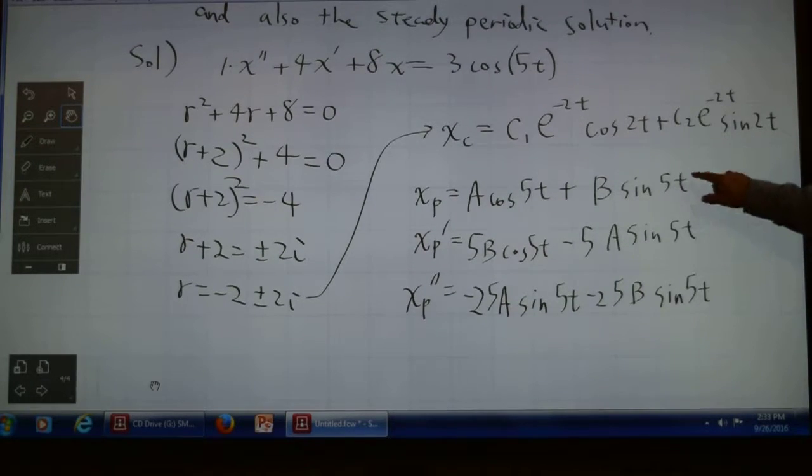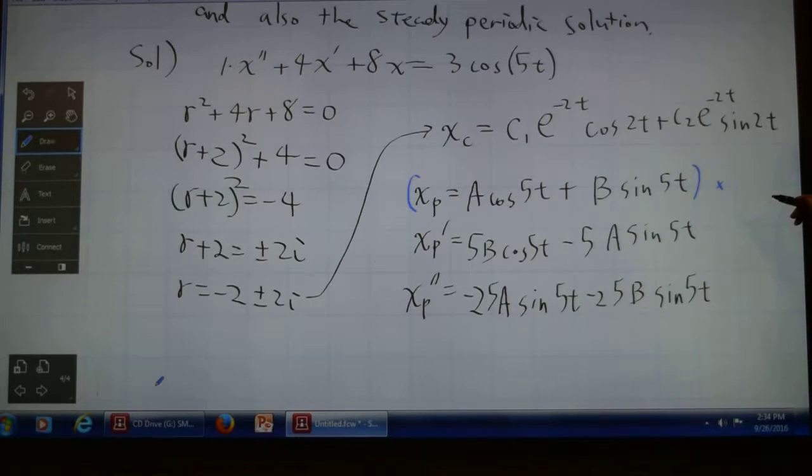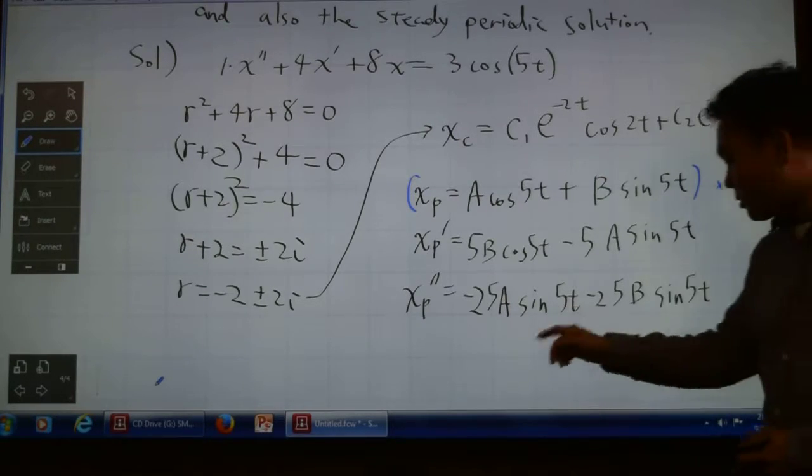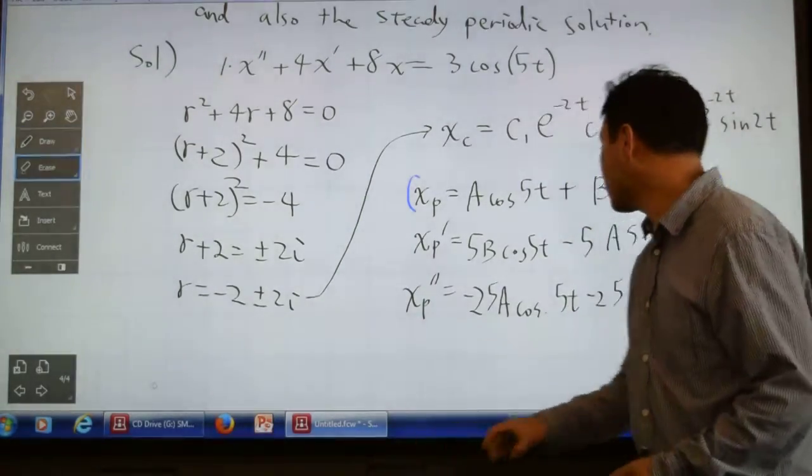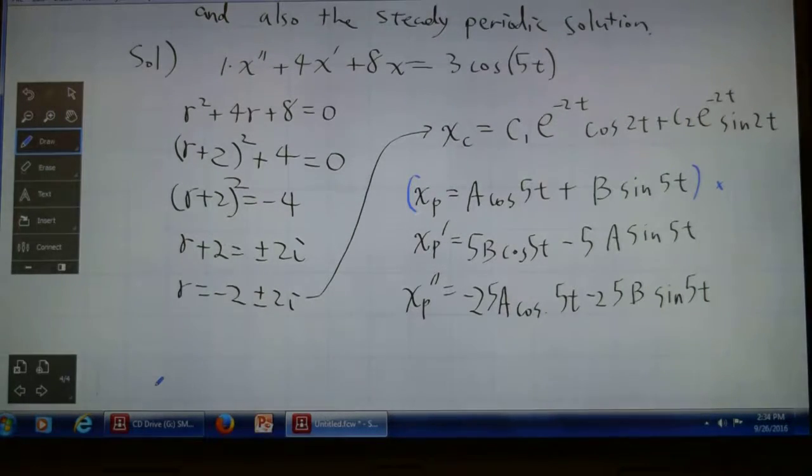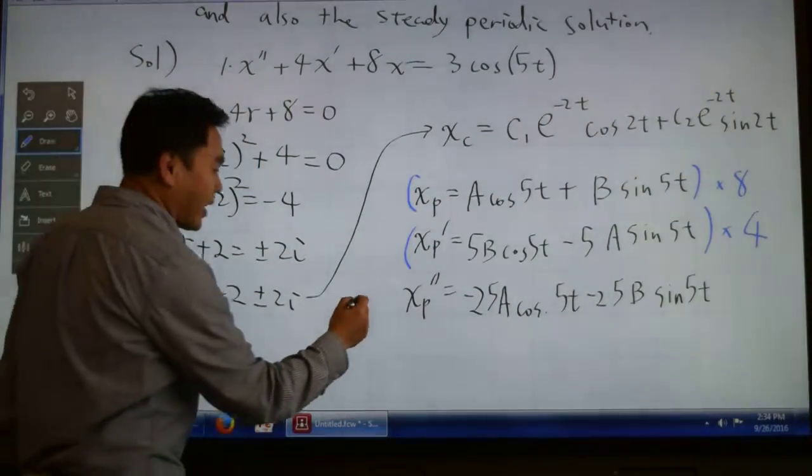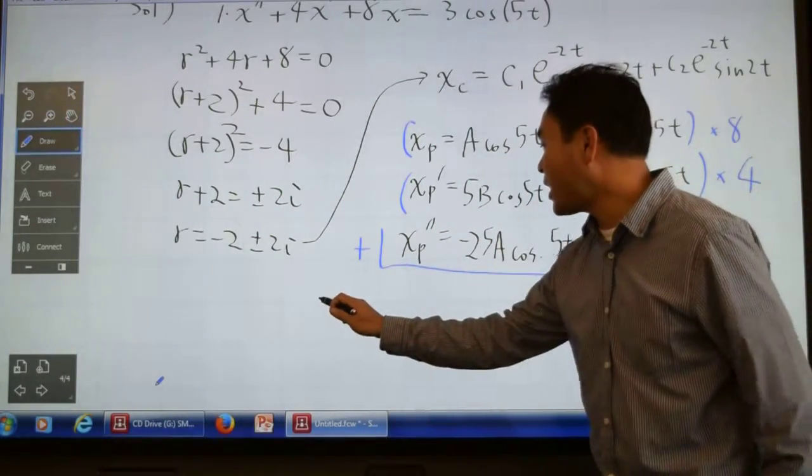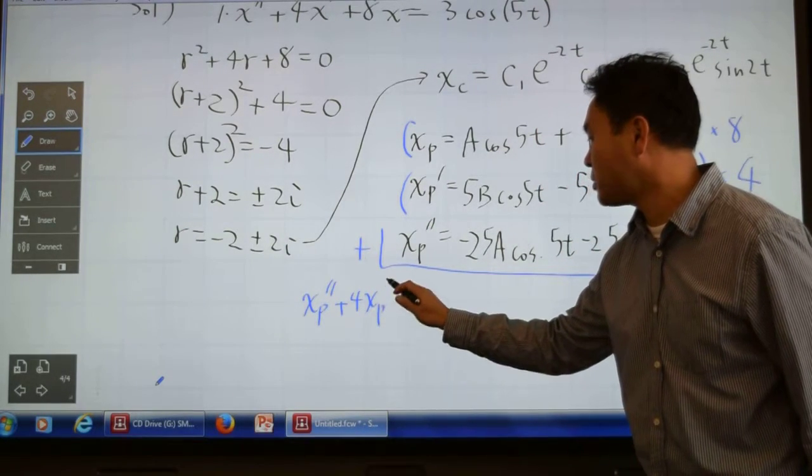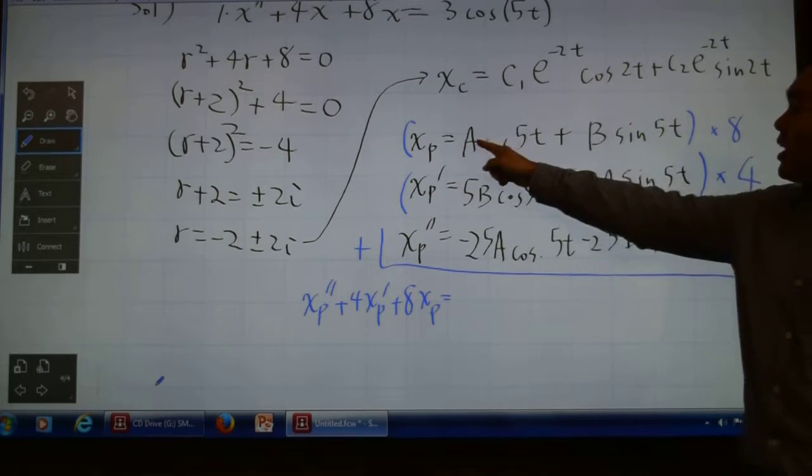Now we have to plug everything into the equation. What should I multiply? 8 for x_p, 4 for x_p', and 1 for x_p''. Then I add up everything. On the left side, I will have x_p'' + 4x_p' + 8x_p.